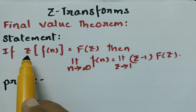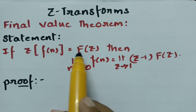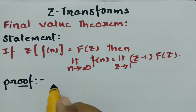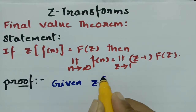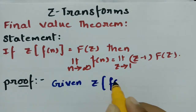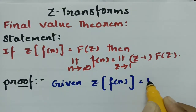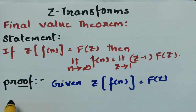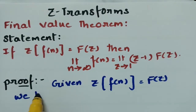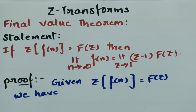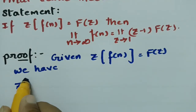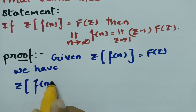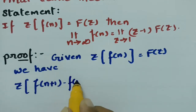What is given here? The Z transform of f(n) is given as capital F(z). According to the definition of Z transform, we consider Z transform of f(n+1) minus f(n).